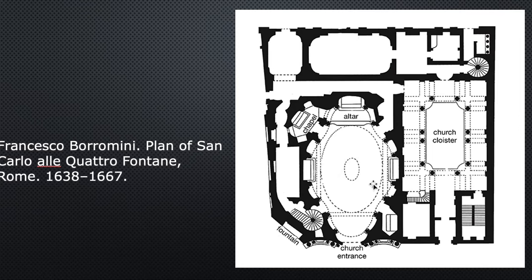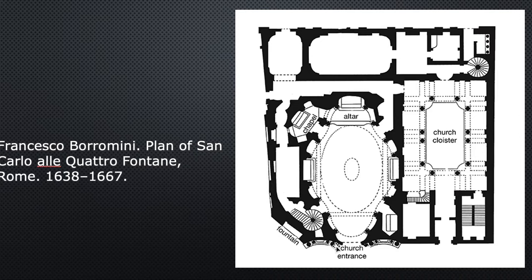This is the main nave of the church. Borromini's breaking more rules — he made his nave in an oval shape. Here's the altar. In this plan, you can also see how the facade of the church undulates with an inward curve, then an outward curve, steps at the church entrance, and then another inward curve. So that's the plan.